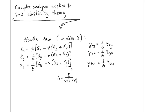We recall Hooke's law in three dimensions for isotropic materials. Such materials are described by two parameters, namely Young's modulus E and the Poisson ratio. Normally we describe Hooke's law by taking the stresses on the left side and the strains on the right side combined with some parameters.